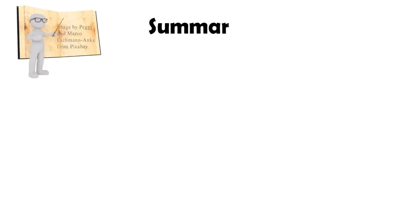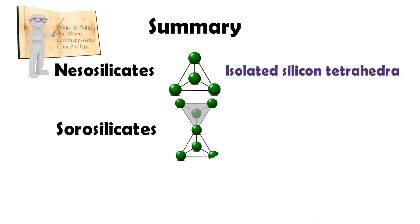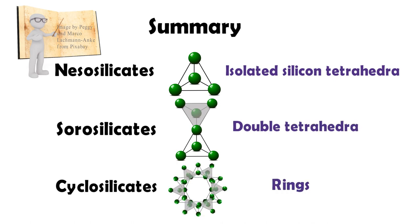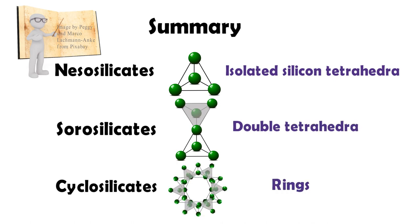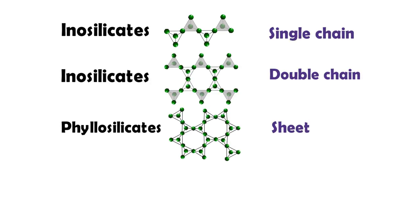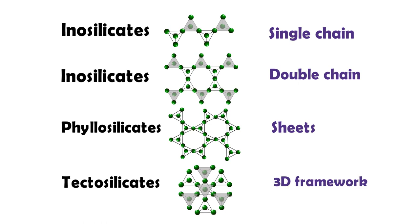Okay, let's summarize. Nesosilicate have the orthosilicate ion, which consists of isolated tetrahedra. Sorosilicate have double tetrahedra. Cyclosilicate have rings. Inosilicate have single chain and double chain. Phyllosilicate have sheets. Tectosilicate comprise a 3D framework.